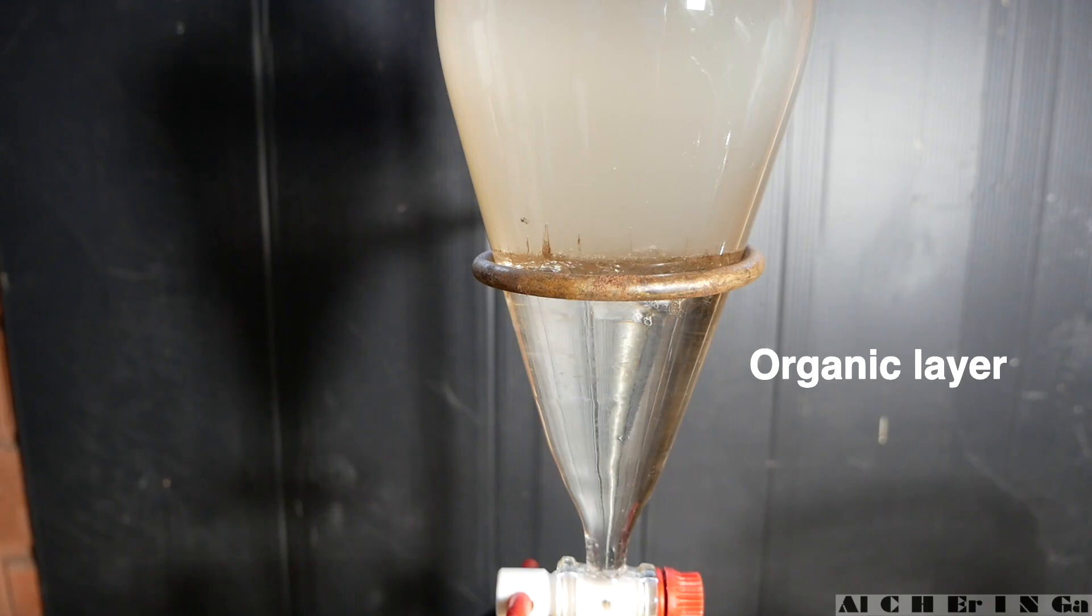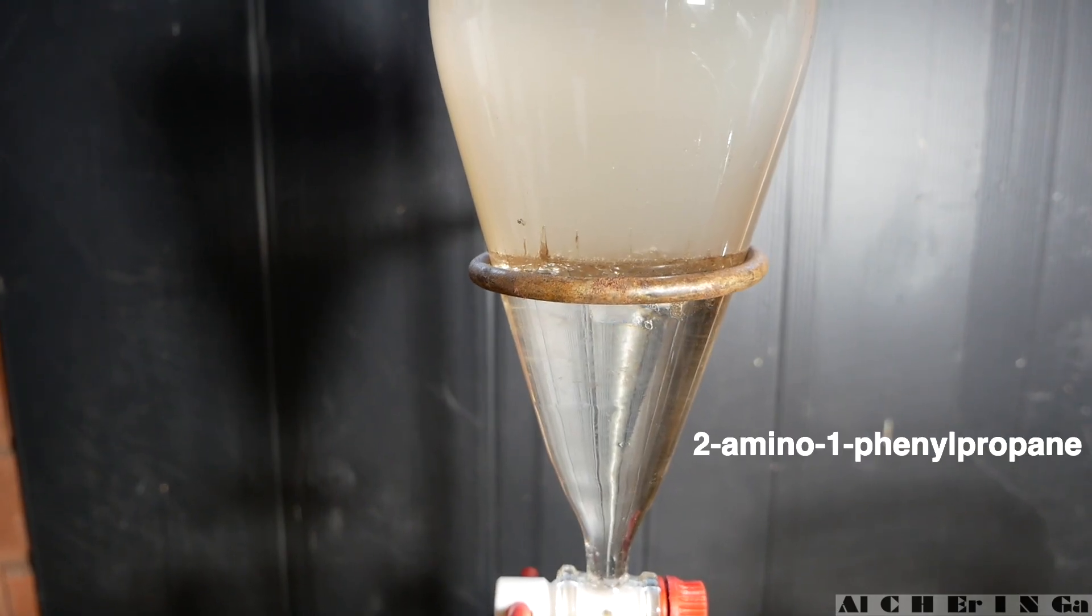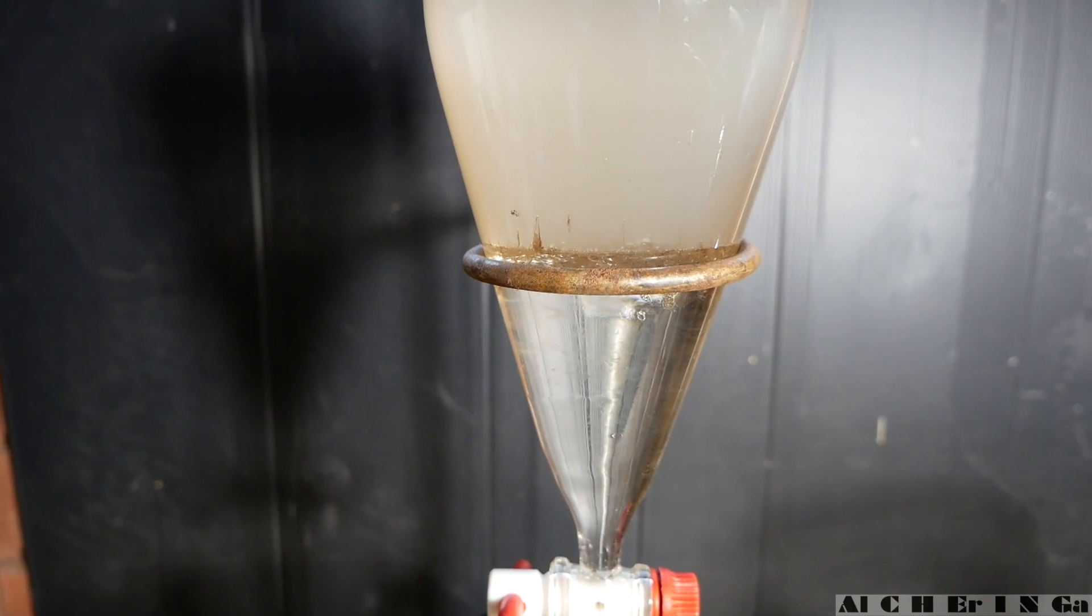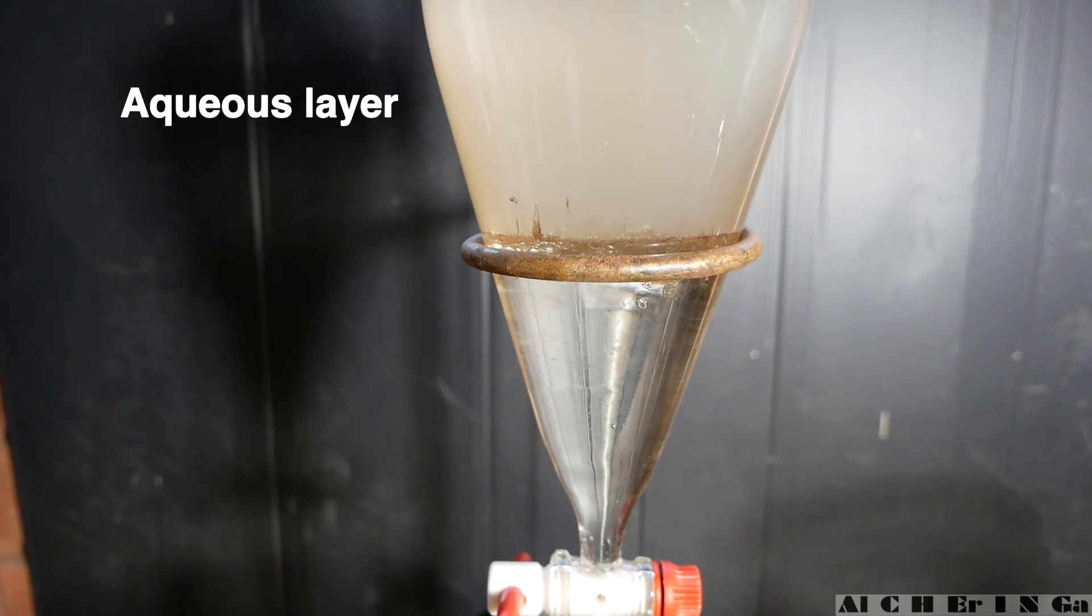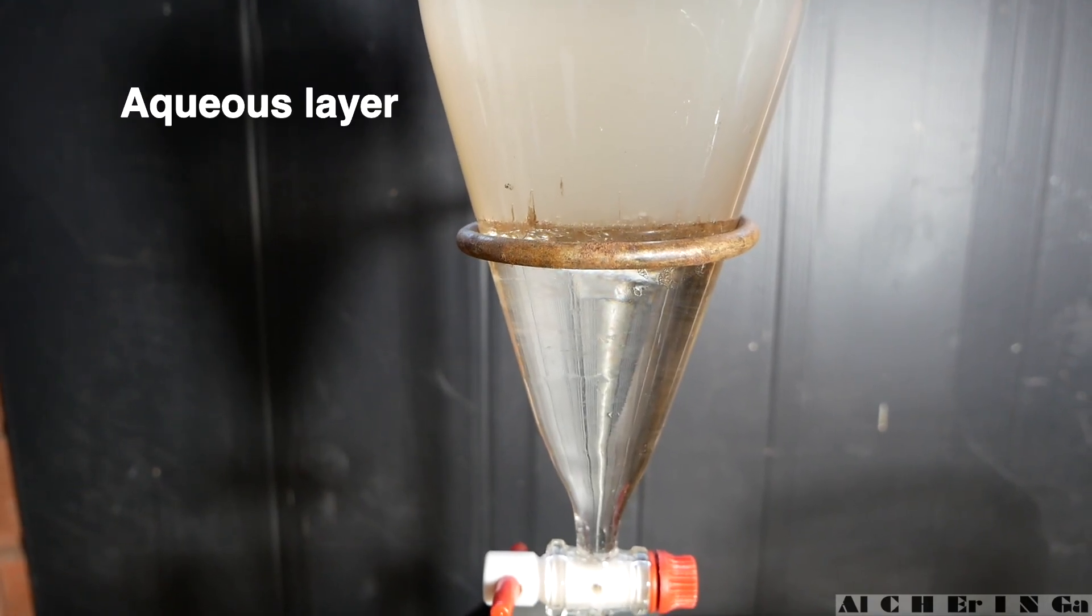The bottom layer is the organic layer which contains our product, 2-amino-1-phenyl-propane in the free base form. The upper layer is the aqueous layer that contains salts and other unwanted by-products that we don't want.